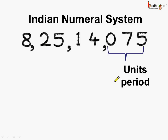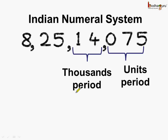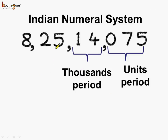This is the units period, which consists of ones, tens, and hundreds places. So we get the first comma marking the thousands. Next, we have the thousands period. It consists of only two places left of the units period, so we get the second comma here, which marks the beginning of lakhs.